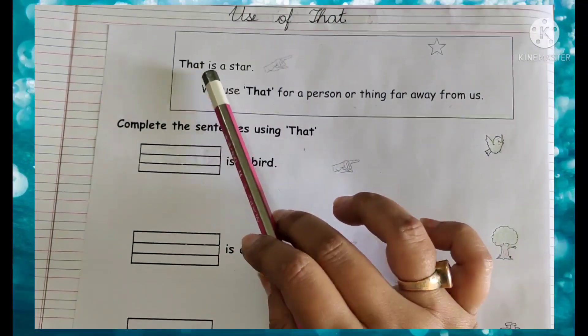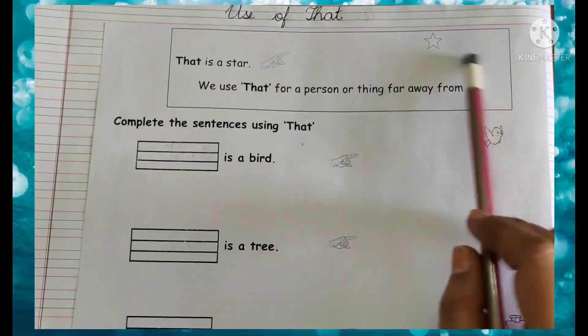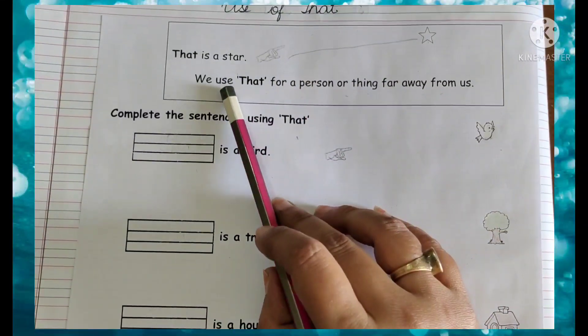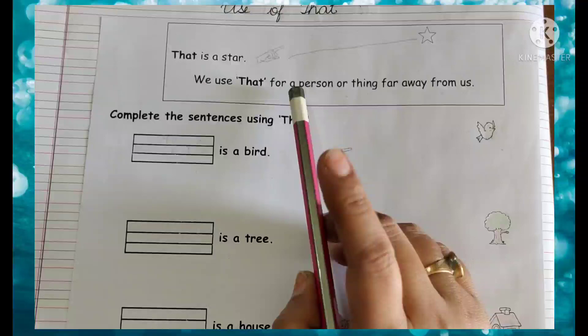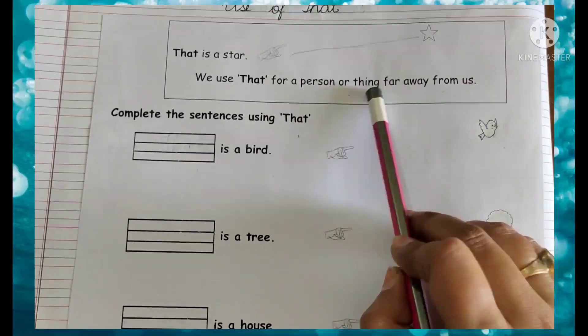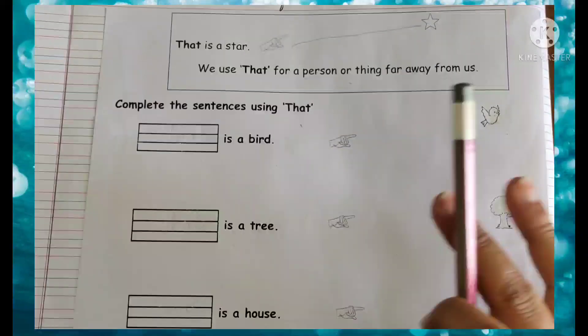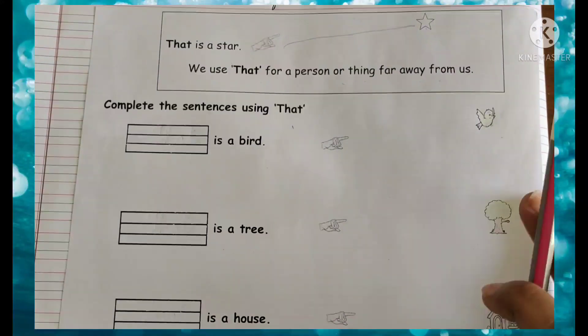The star, that is a star. So the star is, see, very far from the hand. So we use that for one person or one thing which are very far away from us. Which are very far. Very far away from us, we use that.